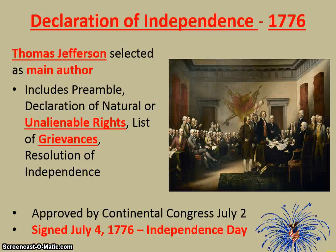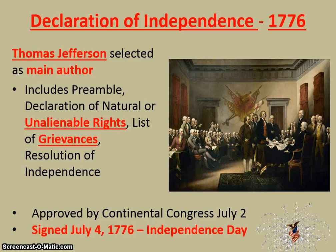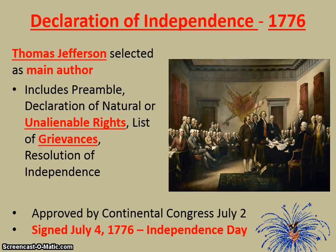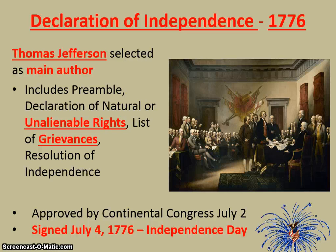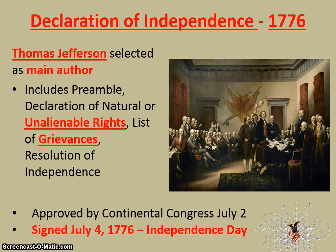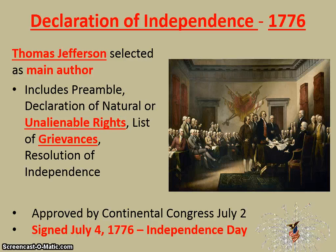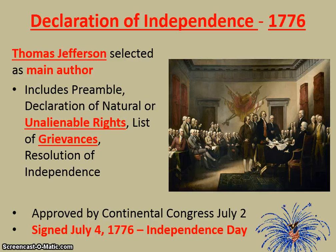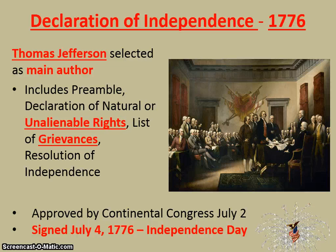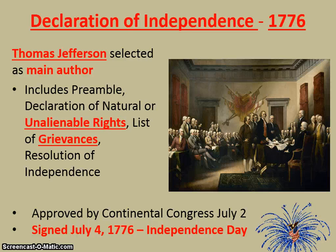Next we get the Declaration of Independence in 1776, about a year later. Thomas Jefferson is the main author, as part of the Committee of Five which also included John Adams and Benjamin Franklin. The parts of the Declaration are the preamble — the opening paragraph — the Declaration of Natural or Unalienable Rights, referring to life, liberty, and the pursuit of happiness, a list of grievances or complaints addressed to King George himself, and finally their resolution of independence. It was approved by the Continental Congress on July 2nd and signed on July 4th, 1776 — which is why the 4th of July is known today as Independence Day.